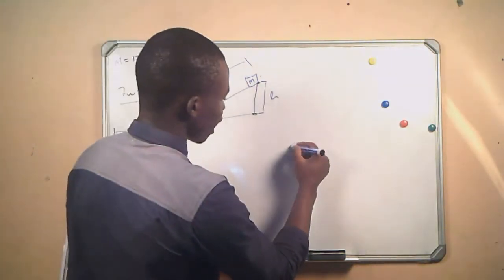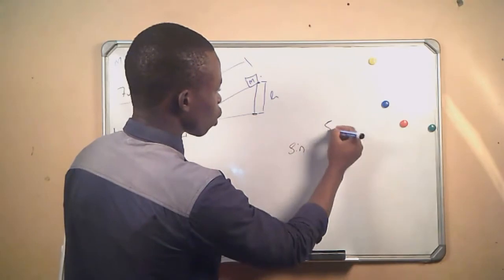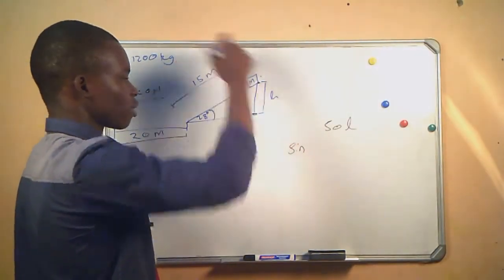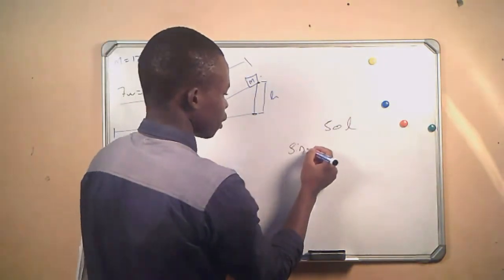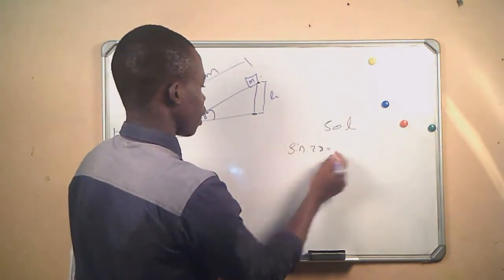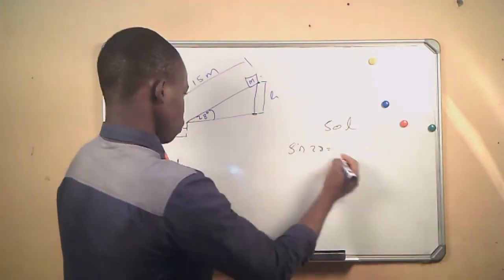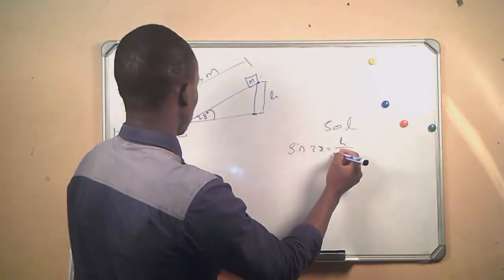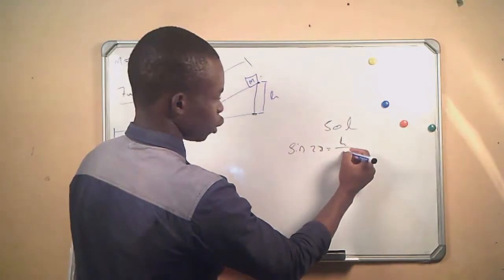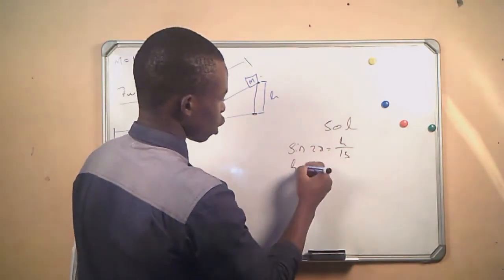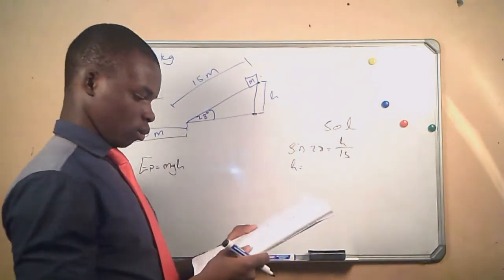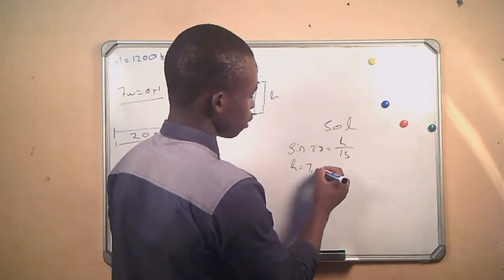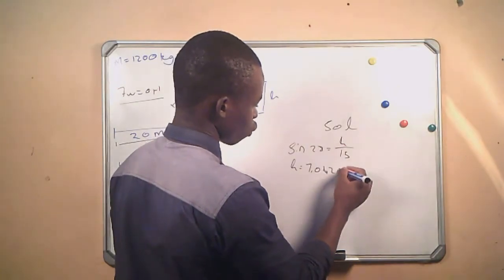We are going to use sine. Since we know that sine is equal to opposite over hypotenuse, we use sine 28 degrees. The opposite is h and the hypotenuse is 15 meters. Therefore h equals 7.042 meters.